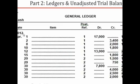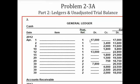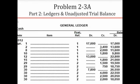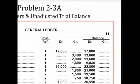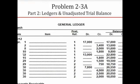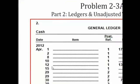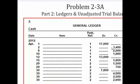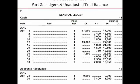So for cash on April 1st on journal page number 1, we debit cash for $17,000, bringing the balance to $17,000. On April 2nd we credited cash for $3,400 on journal page number 1, bringing the balance down to $13,600. For every journal entry that references cash, we record that line in this ledger, recording the debit and credit and showing the running balance. At the end of April, cash had a balance of $18,050.